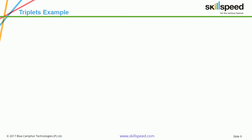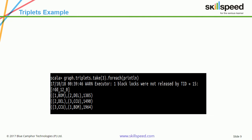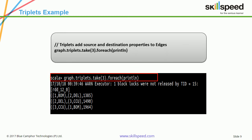Here is an example of a triplet from our airport statistics data. We type graph.triplets.take(3). When we execute this, we get three triplets, each having a source, a destination, and the edge connecting them.